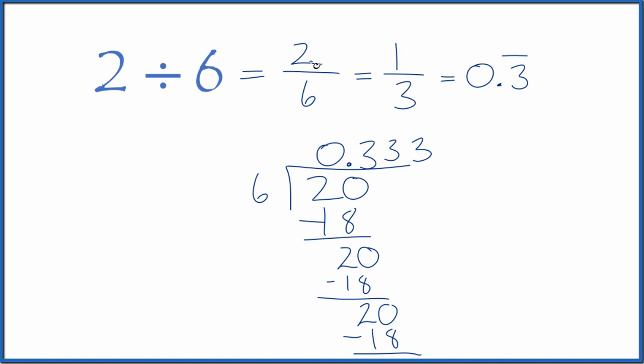So 2 divided by 6 equals the fraction 2 sixths, or 1 third, and equals the decimal 0.3,